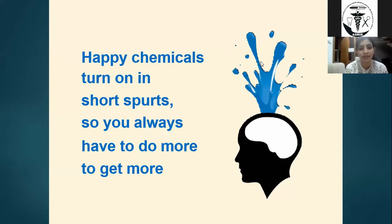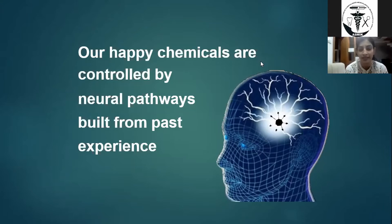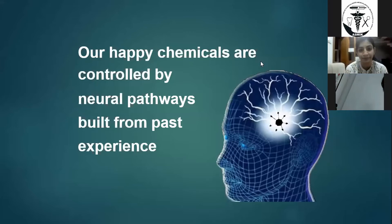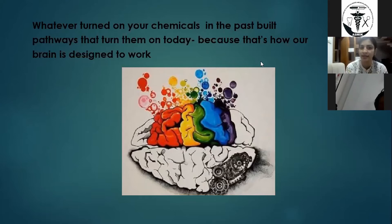Happy chemicals turn on in short spurts, so you always have to do more to get more of them. All these good hormones are controlled by neural pathways built from past experiences. If you did a good job in the past and got appreciated, you feel good — and your body knows that repeating the same thing will get you appreciation again. That is how our brain is designed to work.